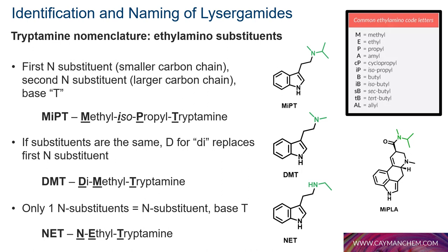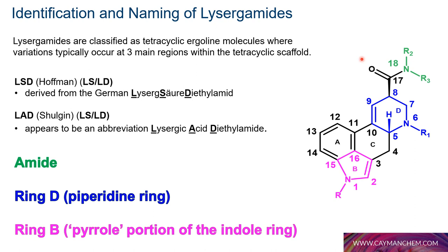Camilla now covers naming of analogues based on modification of the amide (highlighted in green), the piperidine ring (highlighted in blue), and ring B of the indole (highlighted in pink). Some examples use LSD as the parent — the Hofmann naming convention — while others use LAD as the parent — the Shulgin naming convention.